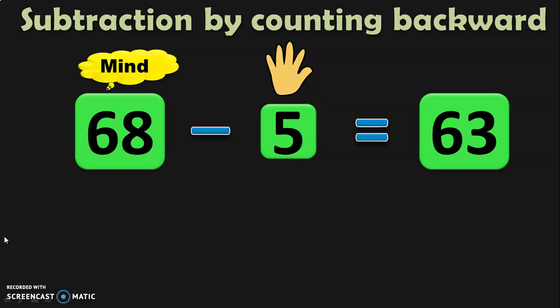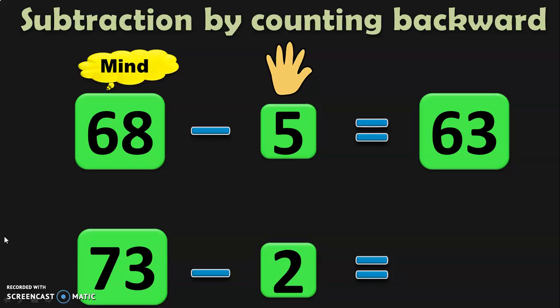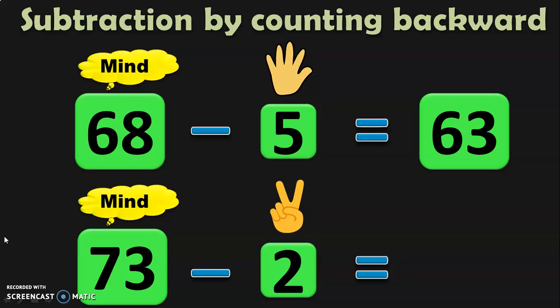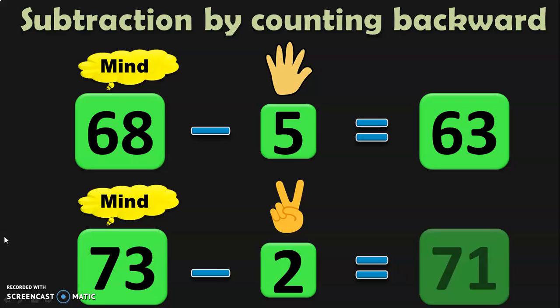If you remember, for addition we counted in the forward direction — we would have counted after 68. Since it is subtraction, we do counting backward and count the before numbers. Let us do another example: 73 minus 2. 73 in the mind, 2 in the fingers — before 73, it is 72, 71. So the answer is 71.